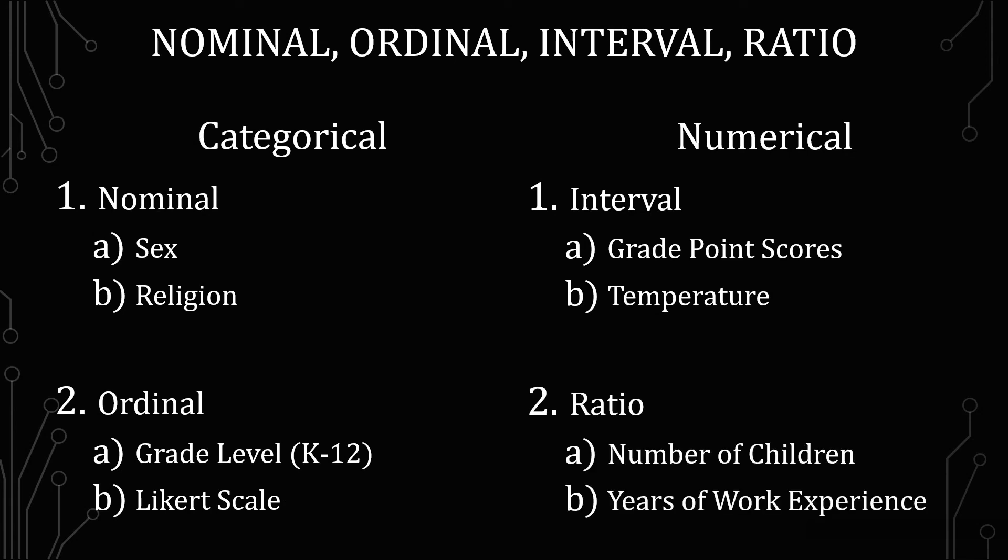Unlike in ratio, which is the other numerical variable, where the number of children—if you say zero, you just don't have children. If you have years of work experience that's zero, it means you don't have work experience. So the main difference between interval and ratio really is that zero either means something or it doesn't mean something.